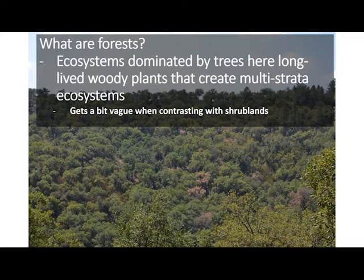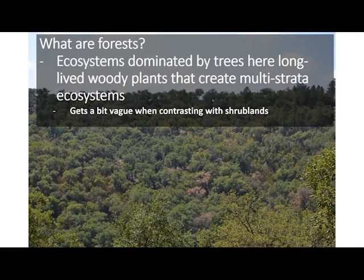The first problem with that definition is: what about shrublands? Many shrub species can be long-lived and can even create a sort of multi-layered canopy structure. That's a point where this is just a vague definition, and there's really not much that helps with that. There is overlap between what we would consider the ecology of shrublands and the ecology of forests.